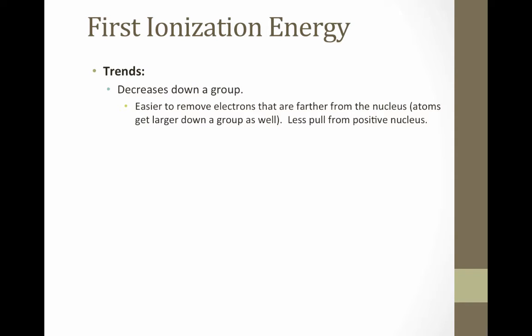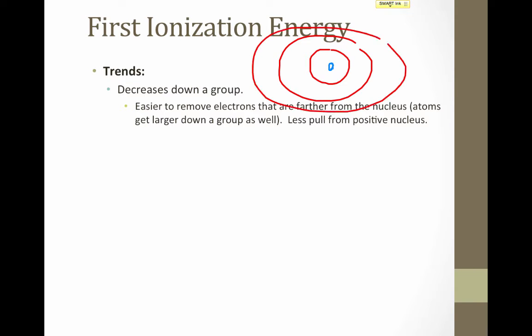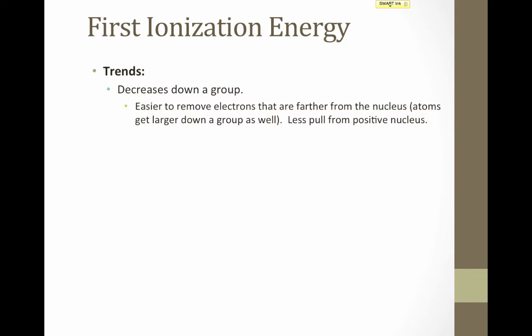So to summarize, the trend for ionization energy is that it decreases down a group. Why is this? As we go down a group, recall that we're adding more and more principal energy levels to the atom. Therefore, the electrons are getting further and further away from the nucleus. You can think of these as rings. So the electrons are getting further and further away from the nucleus, meaning they're being pulled on less by the positive nucleus, so it requires less energy to get them to leave the atom.